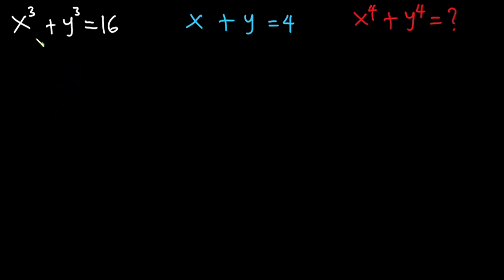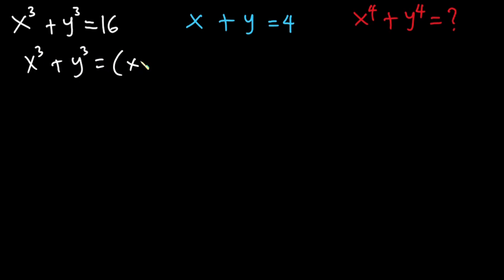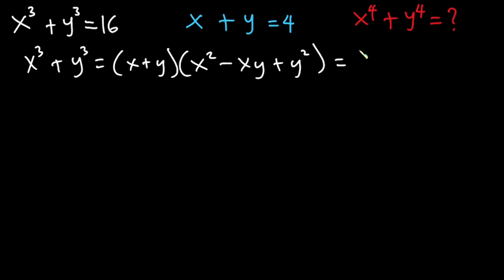Hello everyone. In this video we have been given this system of equations: x cubed plus y cubed is equal to 16, and x plus y is equal to 4. We have to find x to the power 4 plus y to the power 4. But before we begin, if you are new here please consider subscribing. Now let's get started. x cubed plus y cubed is equal to x plus y, into x squared minus xy plus y squared, and this is equal to 16.